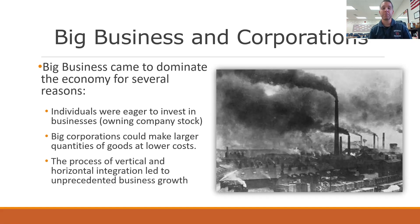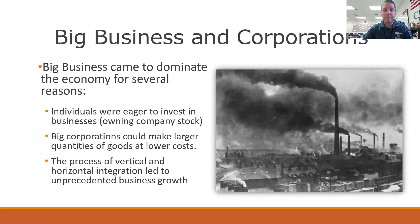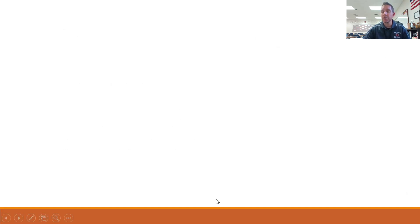Also, big corporations, as opposed to smaller businesses, could make a larger quantity of goods at lower costs, producing better goods at a cheaper price for consumers. Finally, they used two particular processes to make that accumulation of wealth and business efficiency even more dominant, called vertical and horizontal integration. We're about to talk about those as really important concepts, and I'm going to teach them through a little demonstration.